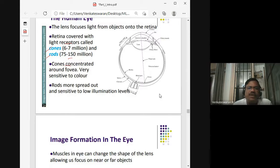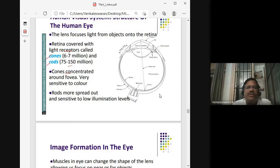Cones are concentrated around the portion called fovea. Rods and cones are situated on the retina, and light enters the retina through this lens. This portion is called the fovea, and on either of these sides you have the light receptors.